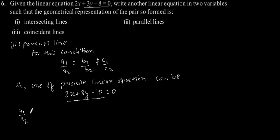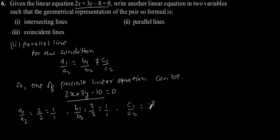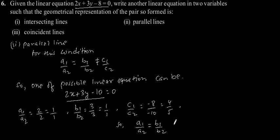So a1 by a2 is equal to 2 by 2, which is equal to 1 by 1. And b1 by b2 is equal to 3 by 3, which is equal to 1 by 1. And c1 by c2 is equal to minus 8 by minus 10, which is equal to 4 by 5.